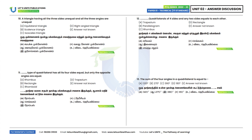Tenth question: This triangle has all 3 sides unequal and all 3 angles unequal. So the answer is a scalene triangle. Option B.